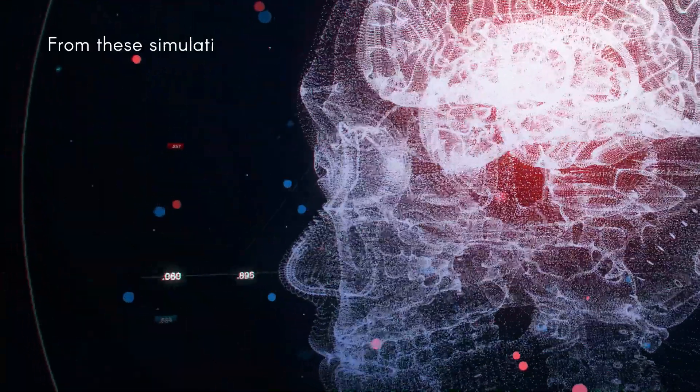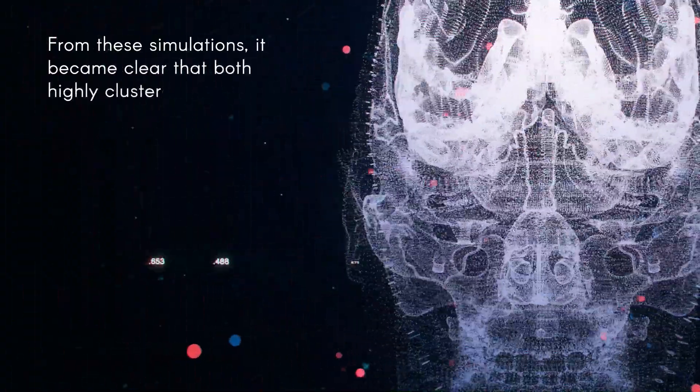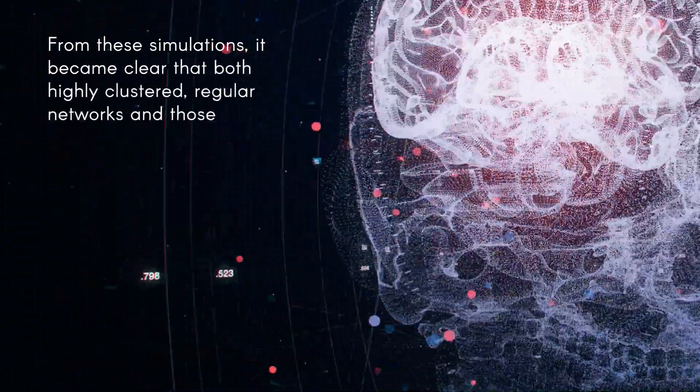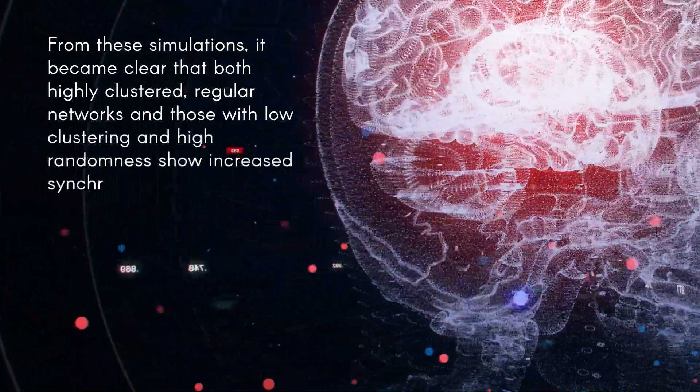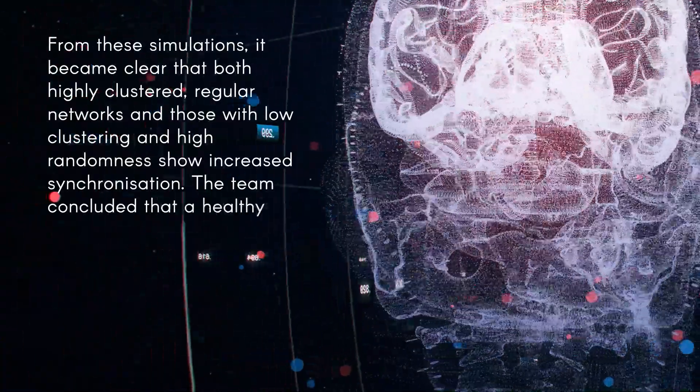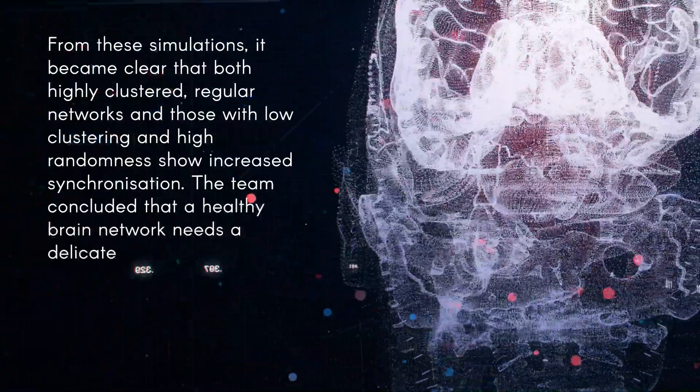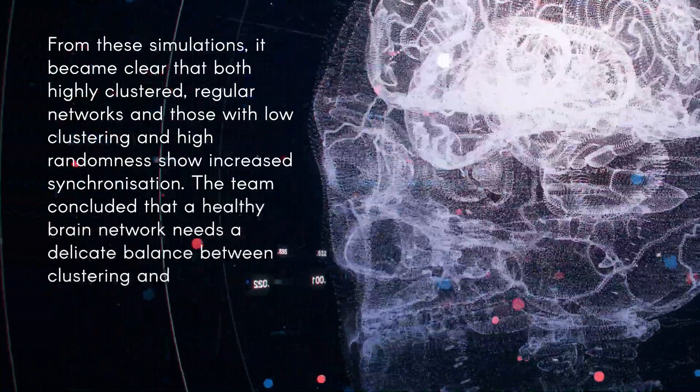From these simulations, it became clear that both highly clustered regular networks and those with low clustering and high randomness show increased synchronization. The team concluded that a healthy brain network needs a delicate balance between clustering and randomness.